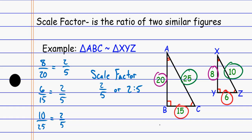But I could also compare it the other way. I could say, hey, the scale factor from the large to the small would just be 5 over 2. So it depends on how you want to compare this thing. If I want to go small to big, it's 2 to 5. If I want to go big to small, it's 5 to 2.